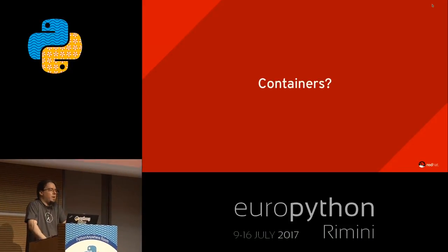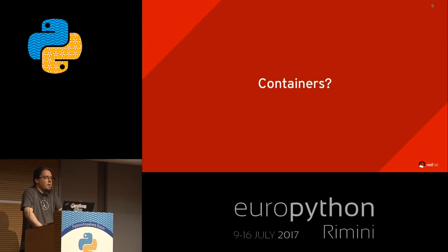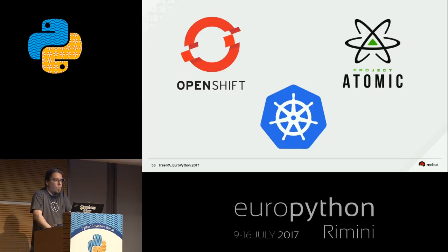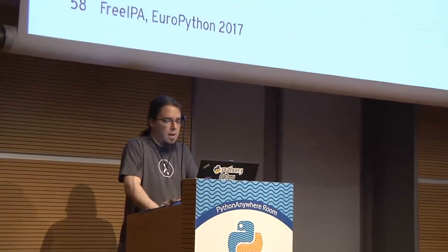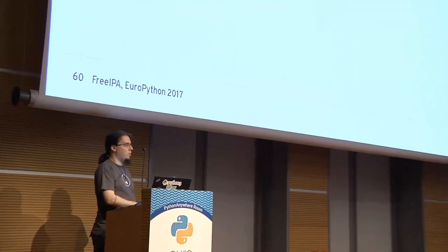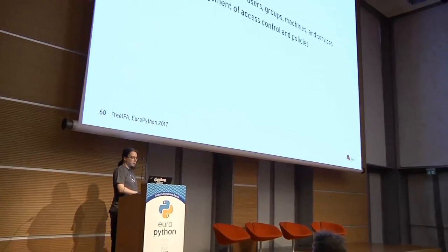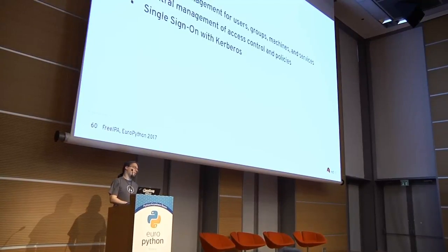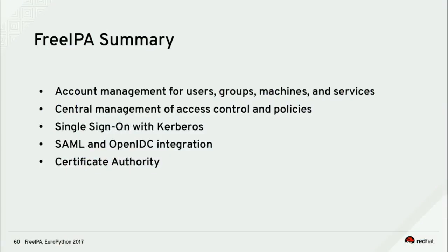Finally, containers are still a challenge because they behave differently from persistent machines. We're forming a new team to integrate this whole stack into OpenShift, Kubernetes, and Project Atomic. Summary: with FreeIPA, you can centrally manage user groups, machines, and service accounts; centrally control access and policies; do single sign-on with Kerberos or via third-party extensions with SAML and OpenID Connect; and run your own internal CA.